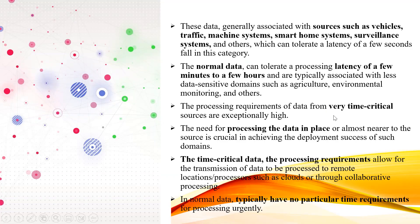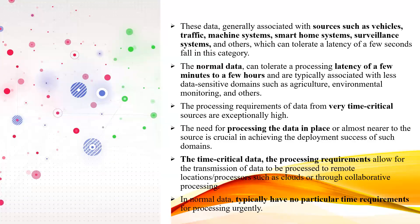To process all these different data requirements, we divide them into different critical device categories. The need to process data in places near the sources is very crucial in successfully deploying IoT in each domain. The time critical processing requirements allow transmission of data to be processed, stored in a database, and then held in the cloud server.